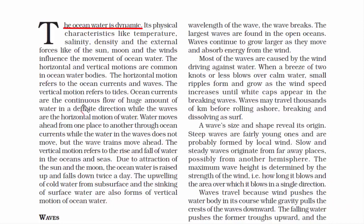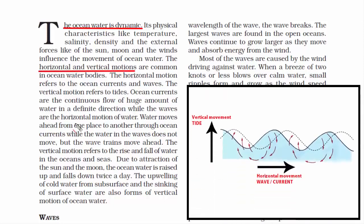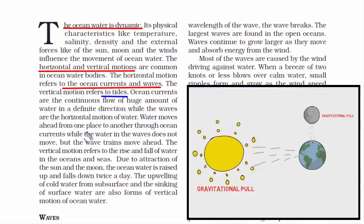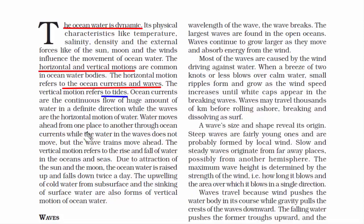There are two ways ocean water moves: one is horizontal motion and the other is vertical motion. Horizontal motion includes ocean currents and waves, which are basically parallel to the ground. Vertical motion refers to tides — the rise and fall of sea level — which happens due to the gravitational attraction of the sun and the moon. Let's look at some factors that influence the movement of ocean water.